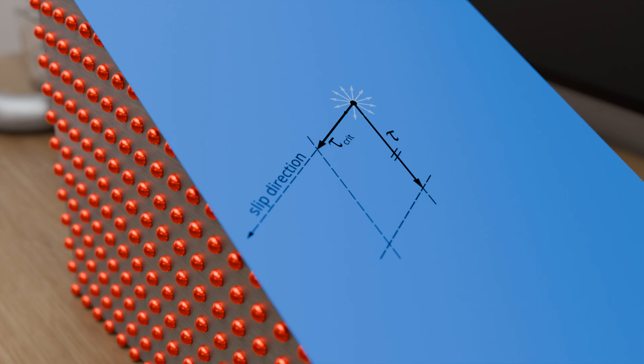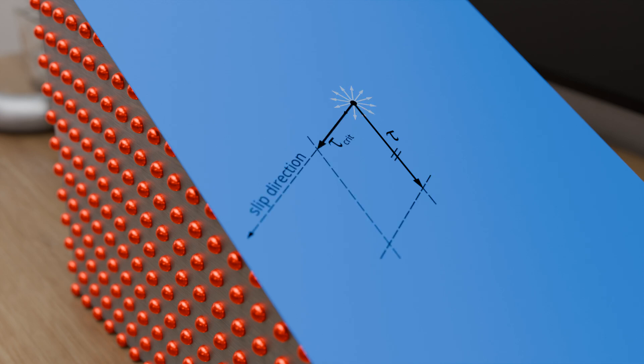The term 'resolved' in critical resolved shear stress means that the force or the shear stress acting in the slip plane must also be decomposed in slip direction. This is crucial because for energetic reasons an atomic plane cannot slide equally in all directions, but only in certain energetically favourable directions. Only this stress resolved in slip direction is decisive for the sliding process, as it not only acts in the slip plane but also in slip direction.